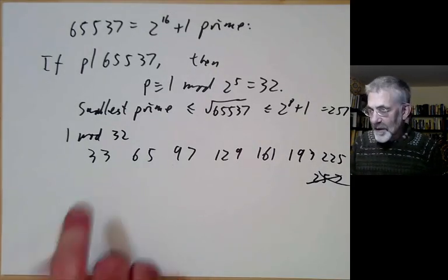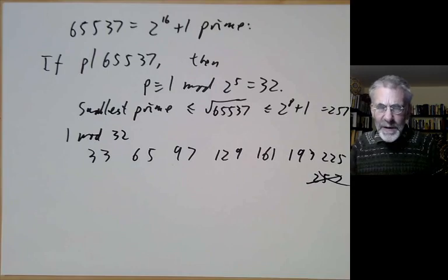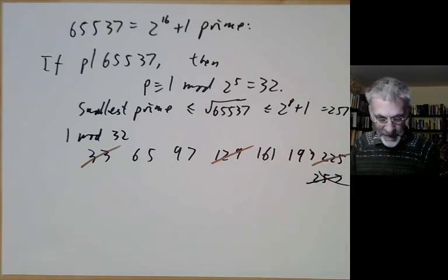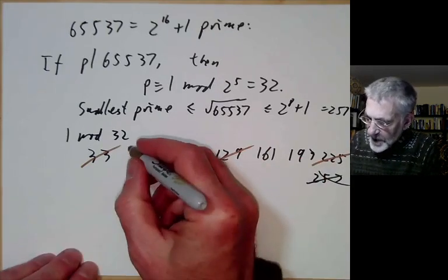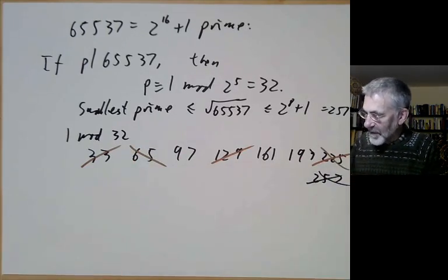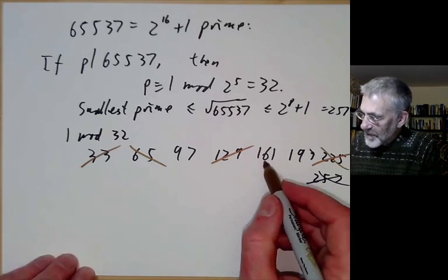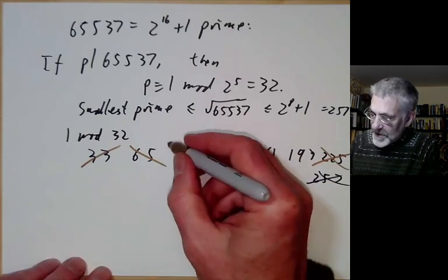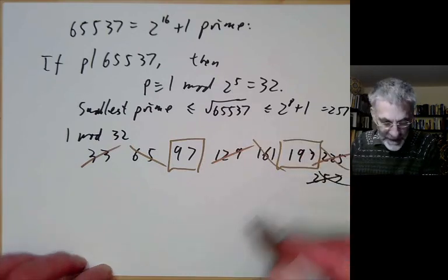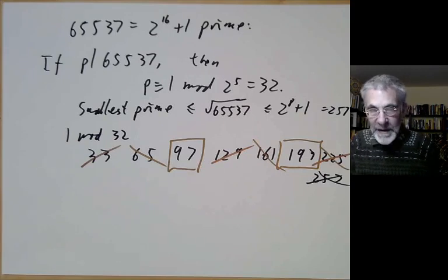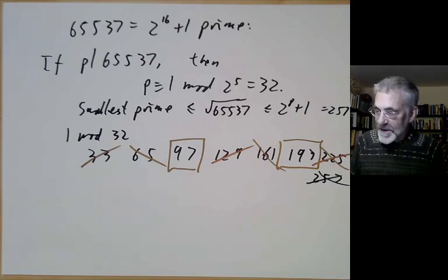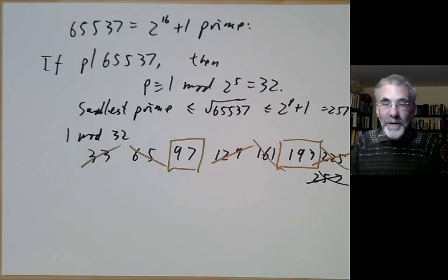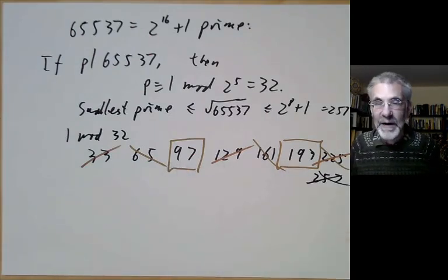257 is already too big so we can stop. We don't need to check all of these because some aren't prime: 33 is divisible by 3, 129 is divisible by 3, 225 is divisible by 3, 65 is divisible by 5, 161 is divisible by 7. This leaves just two numbers to check: 97 and 193. That just takes a couple of minutes by long division. So Fermat's theorem has reduced the checking from about an hour of tedious numerical calculation to a couple of minutes.